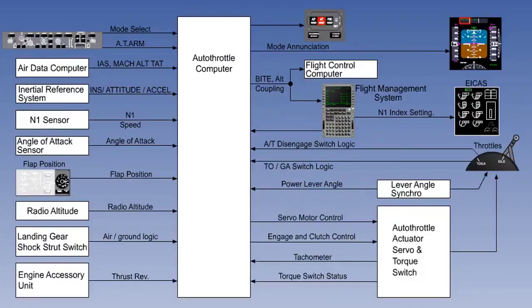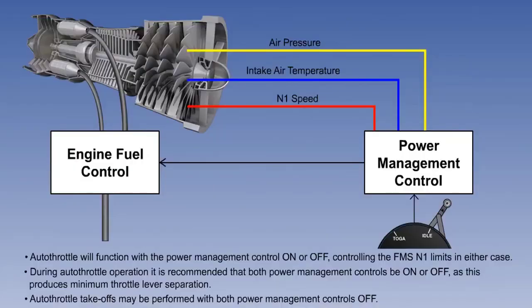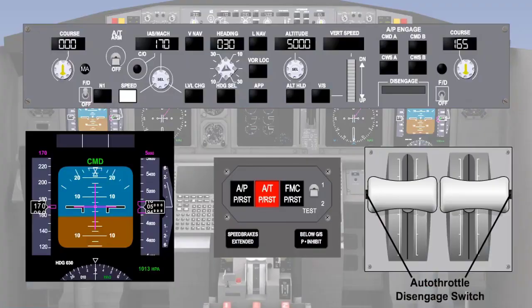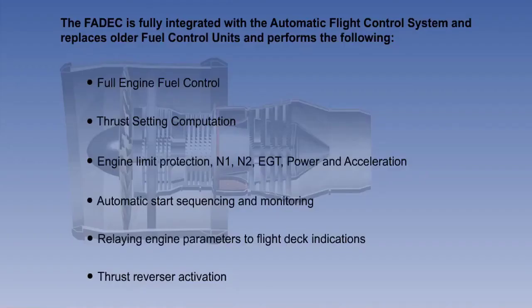During this lesson, you have learned about the components, inputs and outputs in a typical autothrottle system. You saw what was gained from the power management control system. Next, you saw the engagement and disengagement criteria. And finally, you learned what operations the FADEC system carries out.